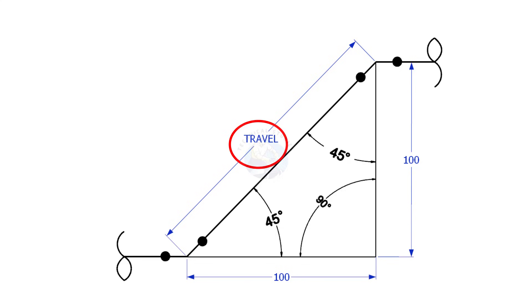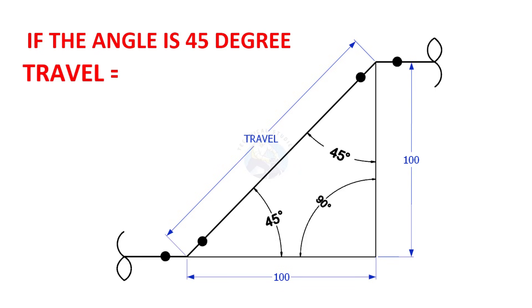What is the travel length if the set or run is given and the angle is 45? Including angle is 45 degrees. Travel length is set multiplied by 1.414 or run length multiplied by 1.414. Here the 1.414 is a constant.